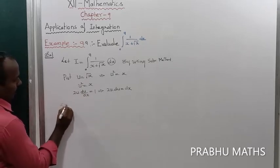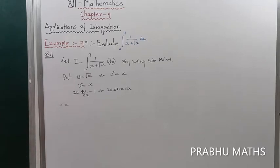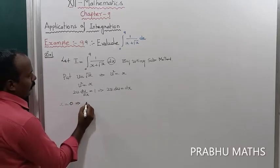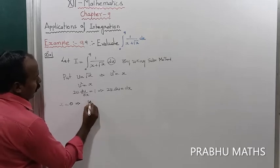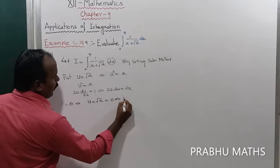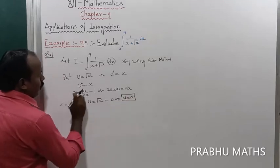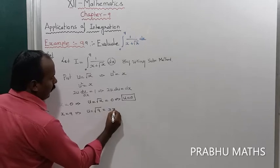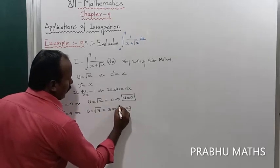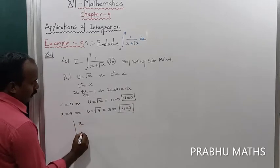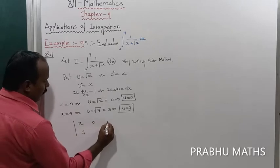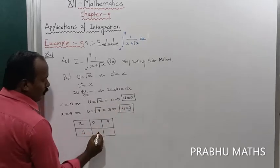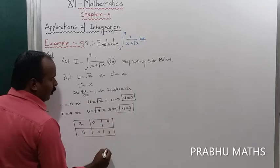Now changing the limits. When x equals 9, u equals root 9 equals 3, so u equals 3. When x equals 0, u equals root 0 equals 0, so u equals 0. Therefore the new limits of integration are 0 to 3.